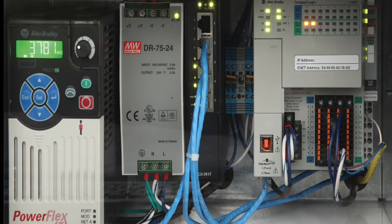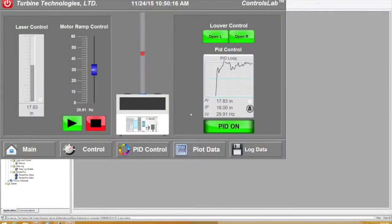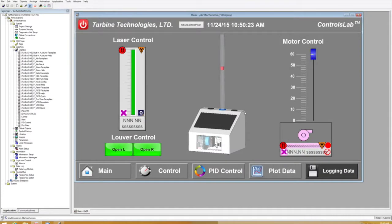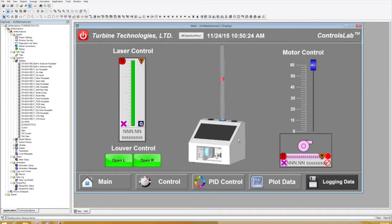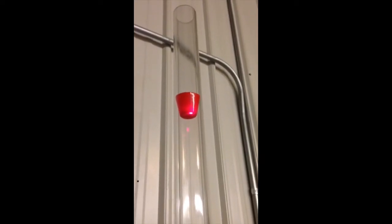It utilizes the very latest industrial automation hardware and software to control air flow for positioning an aerodynamic float in a clear-view vertical tube. The float position is monitored by a laser distance measuring device.